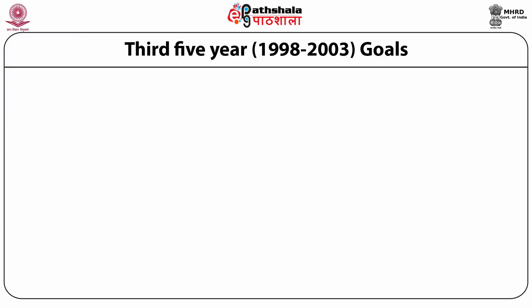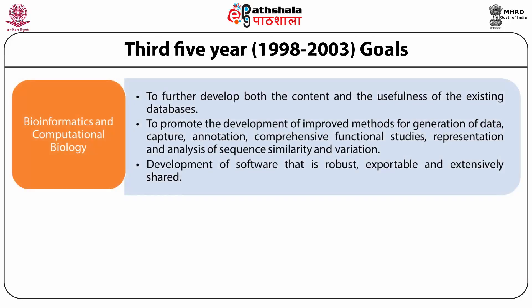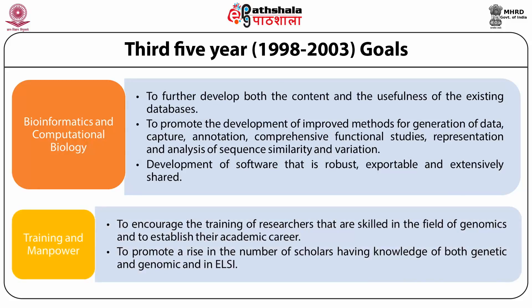The third Five-Year Goals from 1998 to 2003 included: developing bioinformatics and computational biology, involving further development of existing databases, promotion of improved methods for data capture, annotation, comprehensive functional studies, and analysis of sequence similarity and variation, as well as development of robust and shareable software. The next goal was training and manpower, involving encouraging training of researchers skilled in genomics and establishing their academic careers, and promoting an increase in the number of scholars with knowledge of both genetics and genomics and in ELSI.